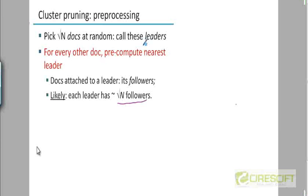These are pseudo-random generators — it's very hard to truly come up with a random number. There are some good pseudo-random generators which work well in practice. These are heuristics, so it's possible that your leaders may not truly be random, in which case this technique can fail. There's no guarantee that it will give you optimal scoring in terms of time, and you can come up with examples which will not work very well with this technique. It's just a heuristic.